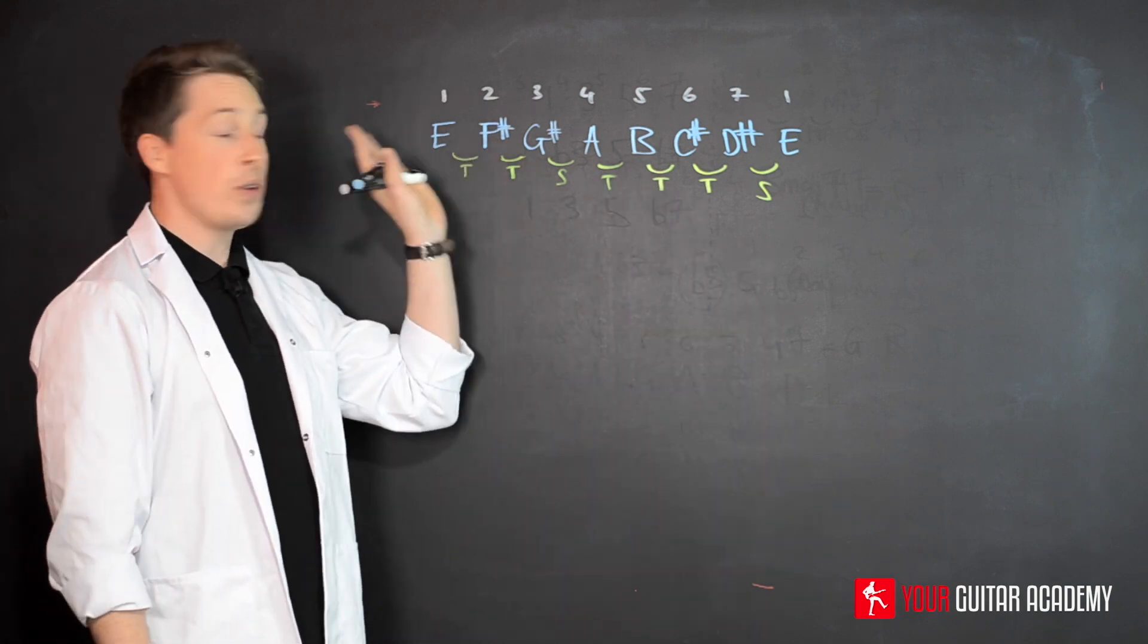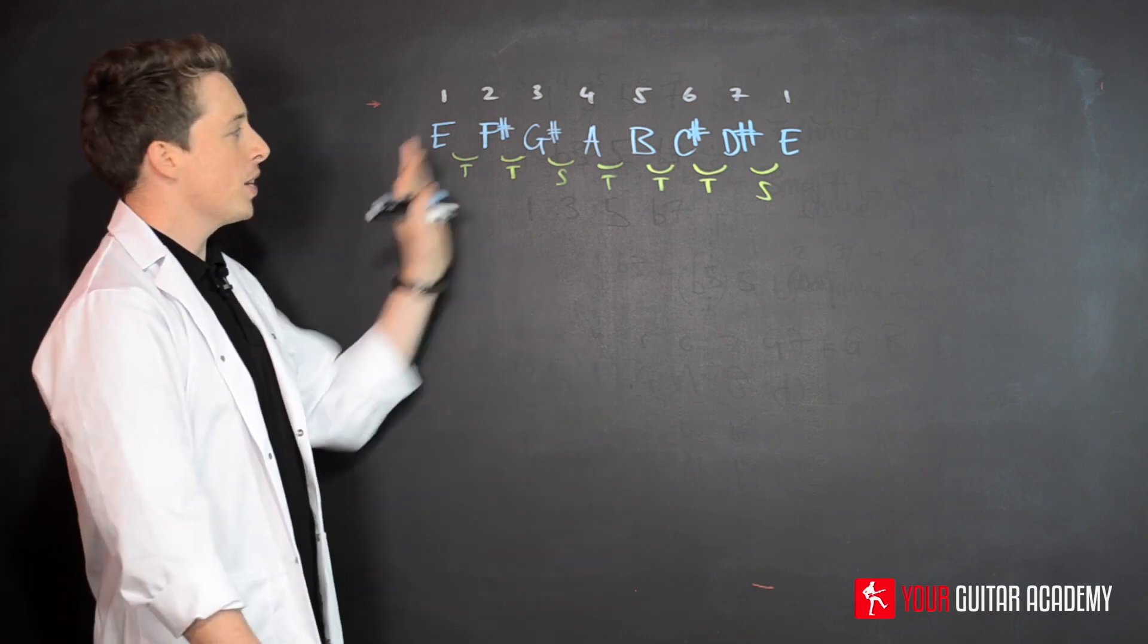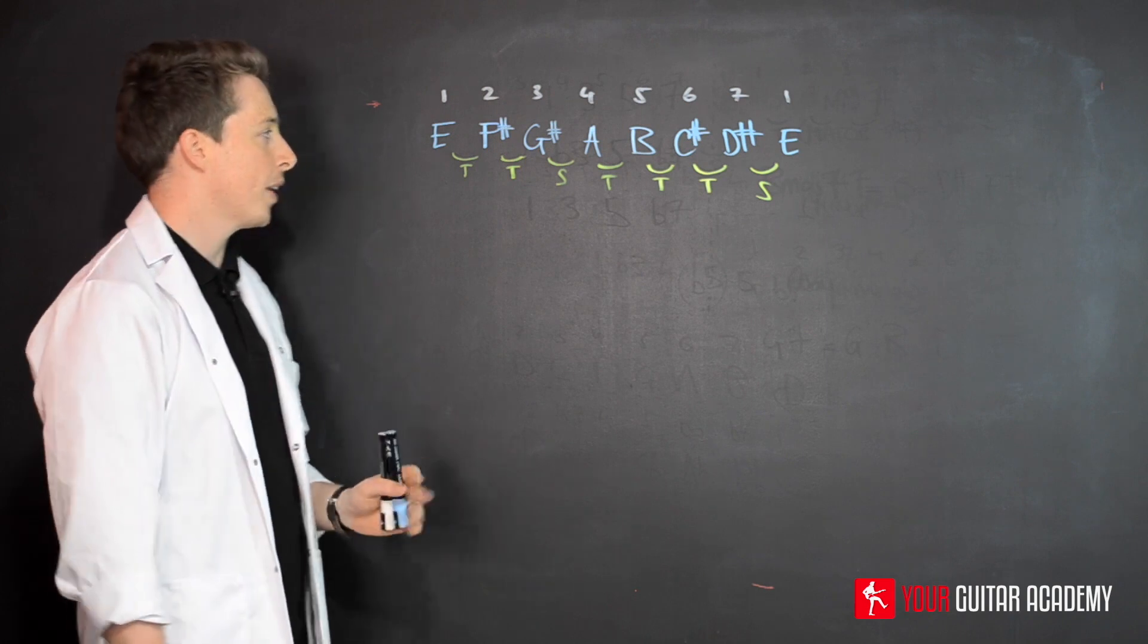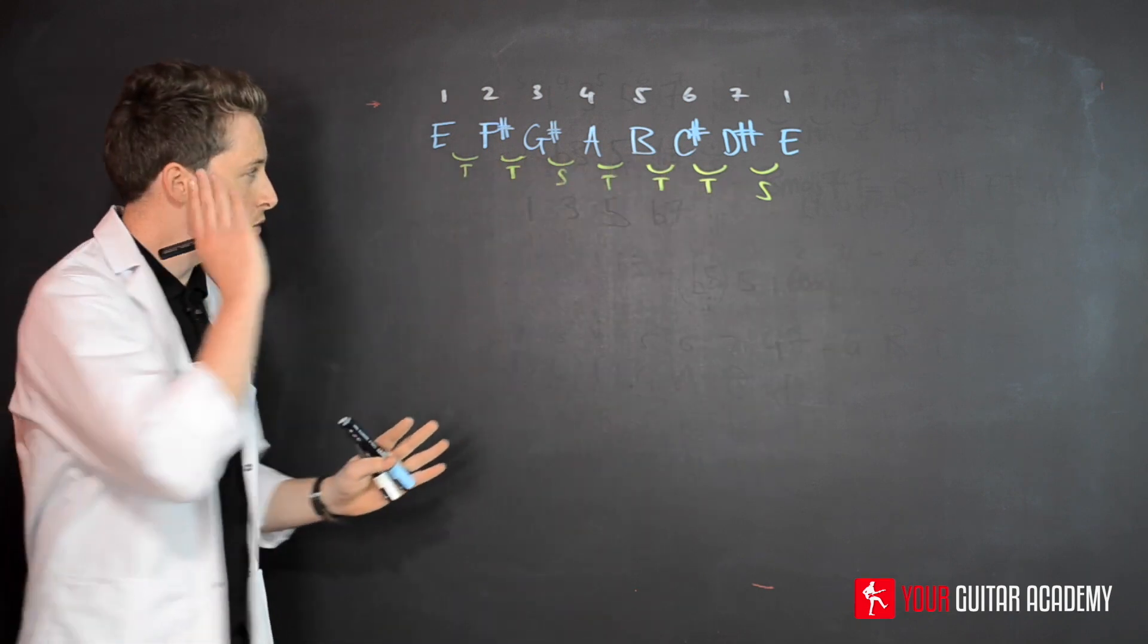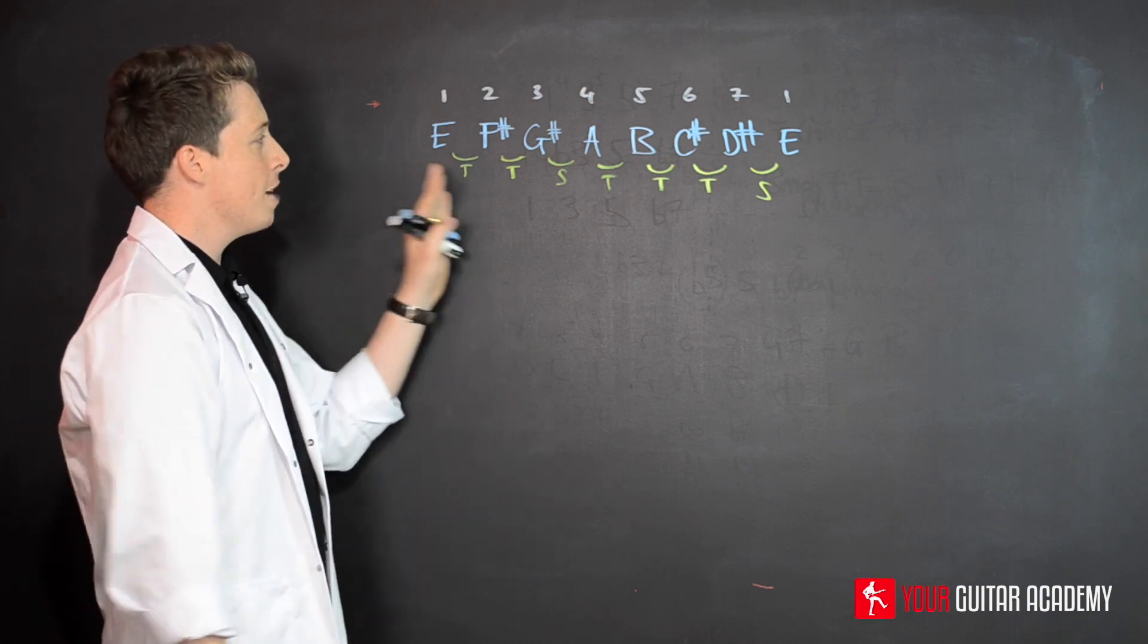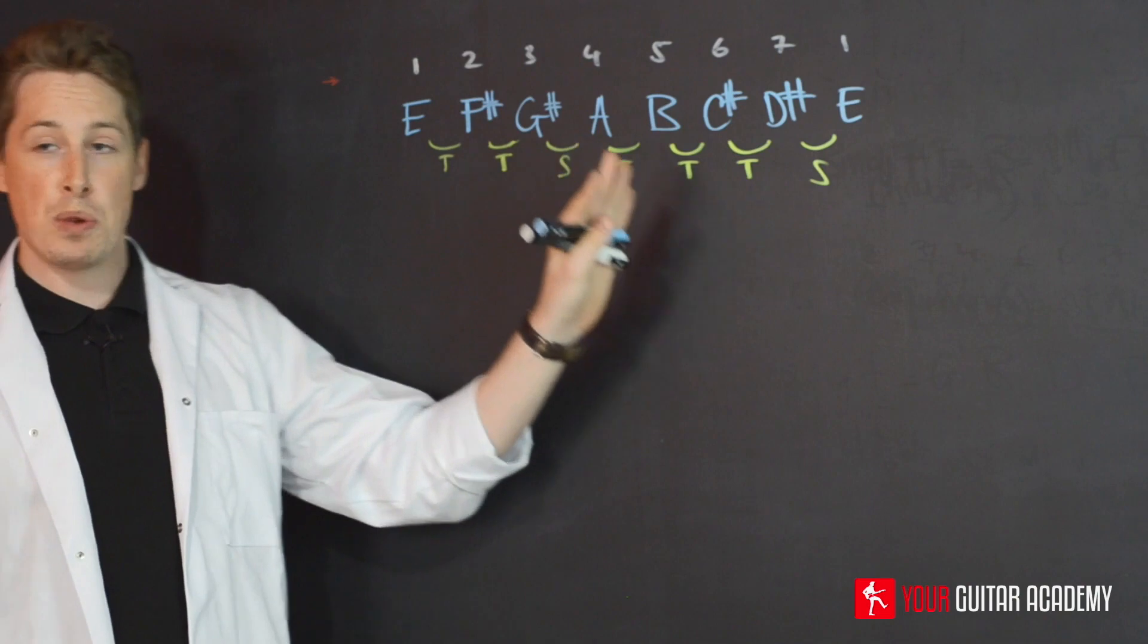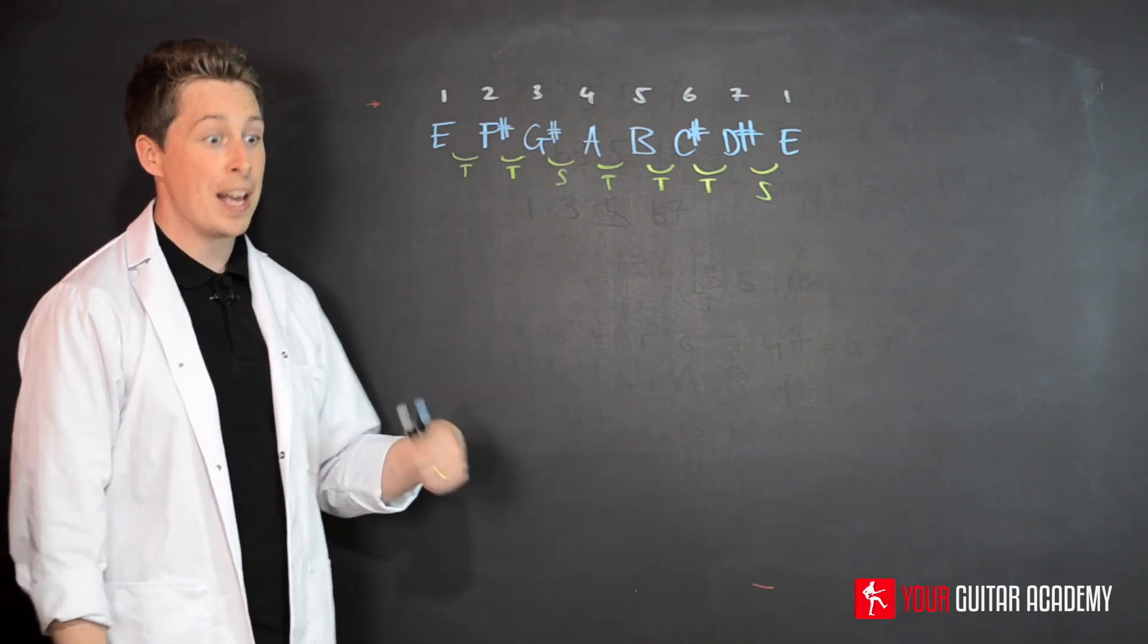Again, and I hate to keep drilling this in guys, but this is the base of everything. If you can't do that bit, there's no chance of doing the rest of it. That's why I just keep going over and over that little section there. With the E major scale written out, let's just have a quick reminder that E major scale has got four sharps. Hopefully that will help you remember it.